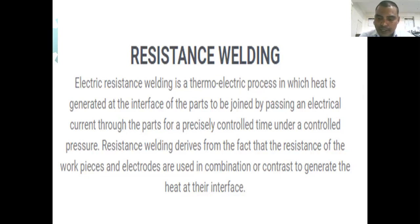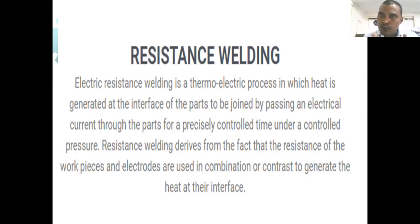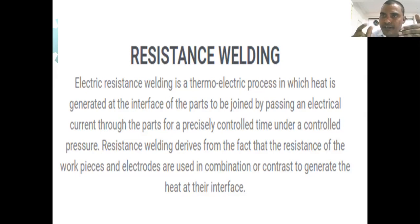In resistance welding, a low voltage — typically one volt — is used, and a very high current passes through the joints for a very short time. The types of resistance welding include seam welding, spot welding, and projection welding. A very high current passes through the joint in a very short time — it may be 0.25 seconds.